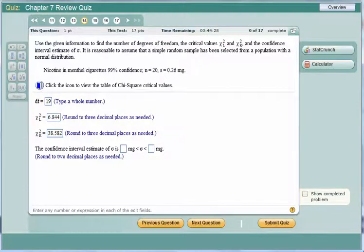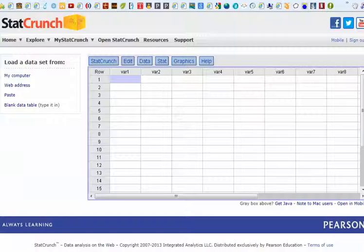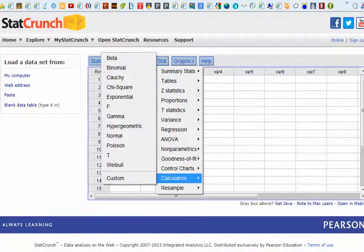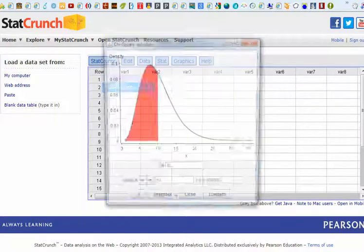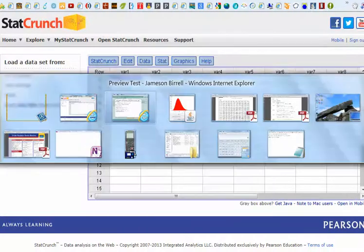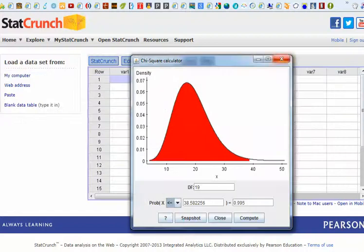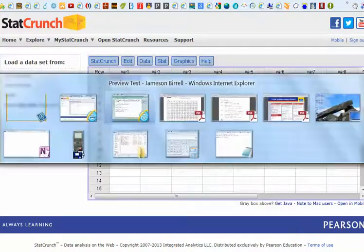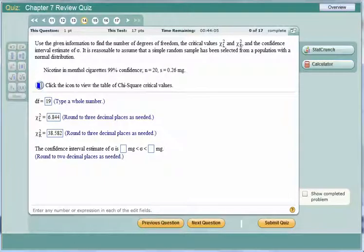So that was how to use StatCrunch. You go, as a quick reminder, if you're finding critical values, you go Stat, you choose Calculator, and then you choose which one you want, T, Normal, or Chi-square. And then you fill in the appropriate information. It's nice, too, because it gives you a picture as you do it, unlike some of the other tools, unlike the table, for example, unlike the Calculator. Now let's just find the confidence interval.